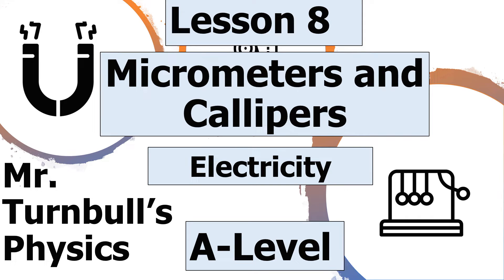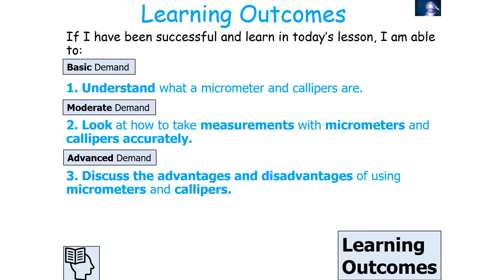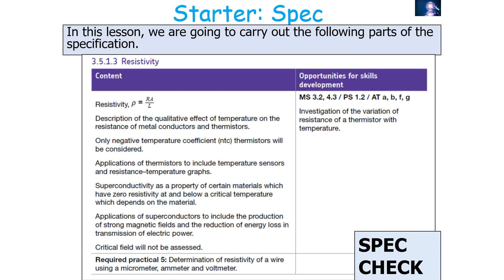Hello and welcome to this lesson on micrometers and callipers, which is part of the electricity topic in AQA A-level physics. In today's lesson we're going to look at how you can take measurements with micrometers and callipers. By the end, we should be able to understand what a micrometer and calliper are, take measurements with them accurately, and discuss their advantages and disadvantages — linking to AQA specification 3.5.1.3 resistivity.